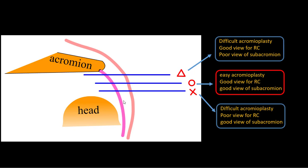Okay, this is a coronal view of the shoulder. You can see the acromion and the humeral head. This is the subacromion space. There are three portals over here.